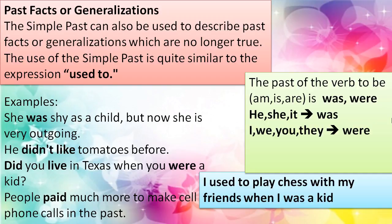The simple past can also be used to describe past facts or generalizations which are no longer true. This use is quite similar to the expression used to — something you used to do in the past, like playing with kids in the street when you were a kid, but now you don't do that anymore because you grew up. So you say: I used to play football with my friends on the street — now I don't. You can also say I didn't use to. Positive or negative: I used to play, or I didn't use to play.